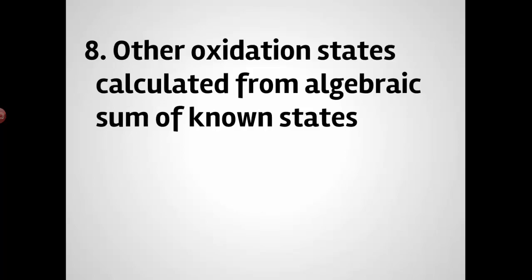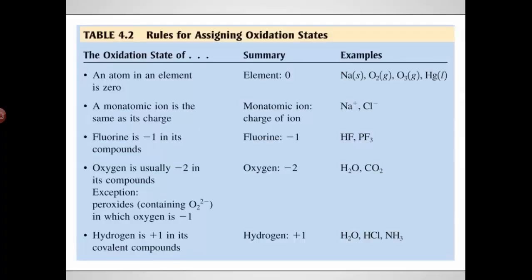So algebraically you can determine the rest of them. Here's table 4.2, and it just gives you some basic ones. You should know these. An atom in an element is zero. Monatomic ion is the same as the charge. Fluorine is always minus one when it's in a compound. Oxygen is almost always minus two, except if it's a peroxide, in which case it's minus one. And hydrogen is always plus one unless it's with a metal, in which case it's minus one.